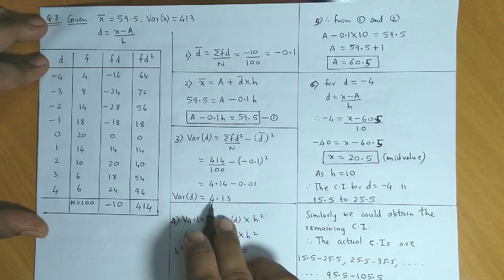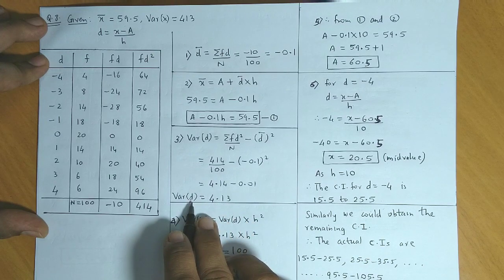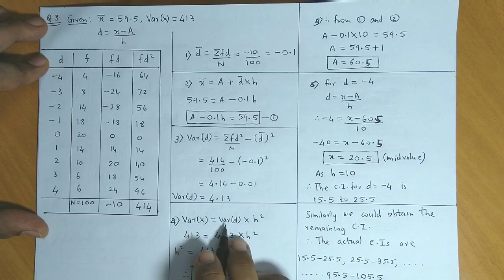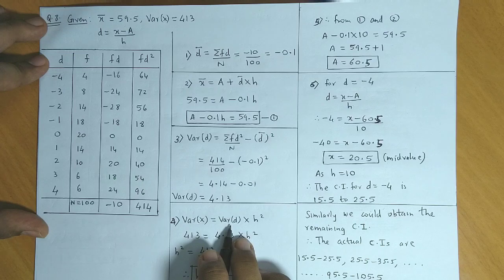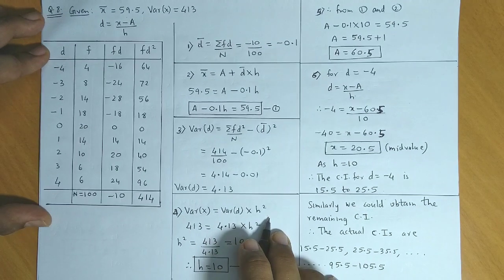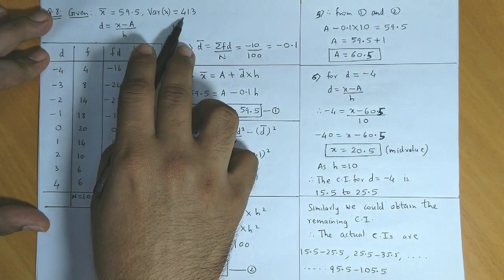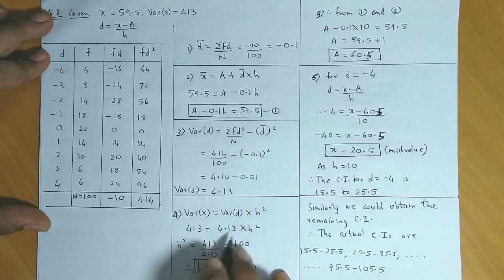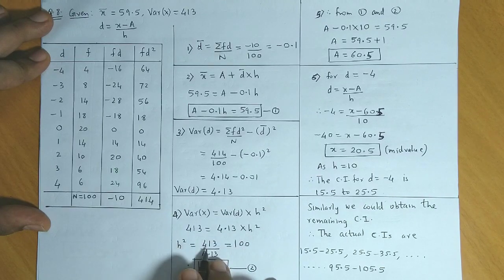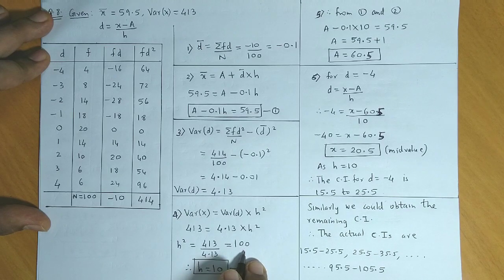To convert variance of d into variance of x, you multiply variance of d by h squared. So variance of x is variance of d times h squared. Variance of x is already given as 413, variance of d is 4.13 times h squared. So h squared becomes 413 upon 4.13, which equals 100. Therefore h equals 10.